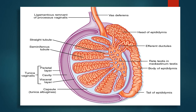This is the detailed structure of the testis and epididymis. The human testis is covered by a connective tissue capsule and is divided into about 300 lobules by fibrous septa. Within each lobule are two to four loops of seminiferous tubules. Each loop empties into an anastomosing network called the rete testis.